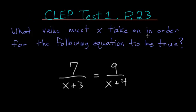What value must x take on in order for the following equation to be true? 7 divided by x plus 3 is equal to 9 divided by x plus 4.